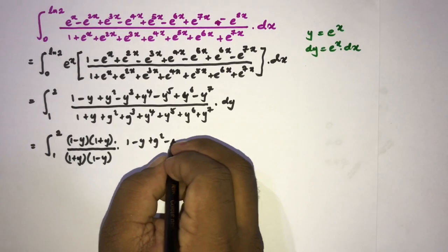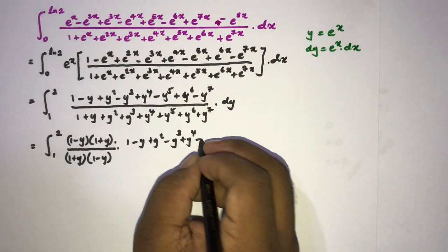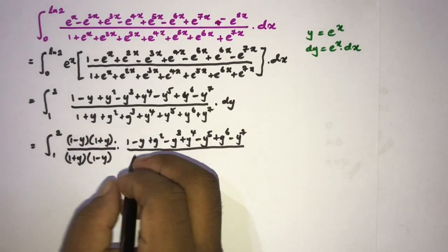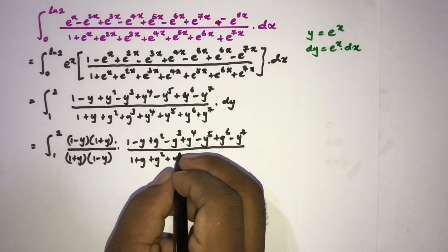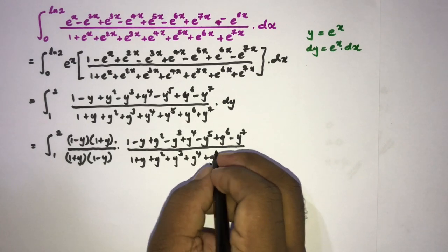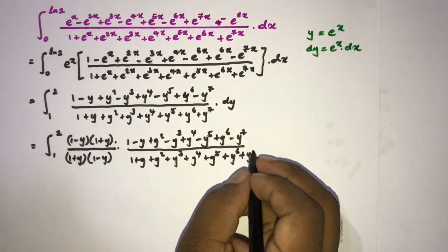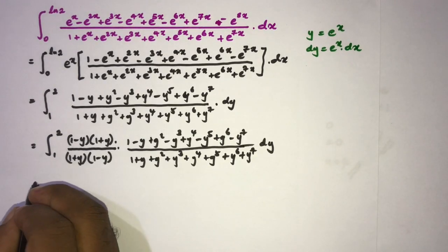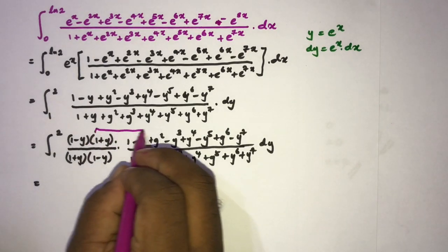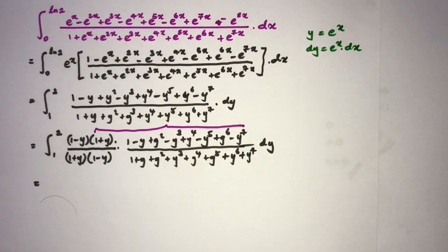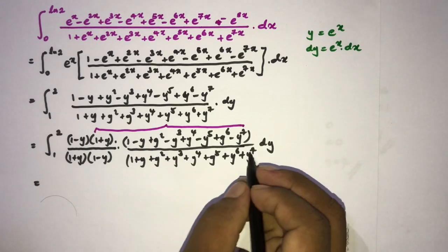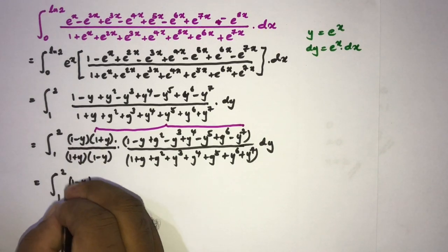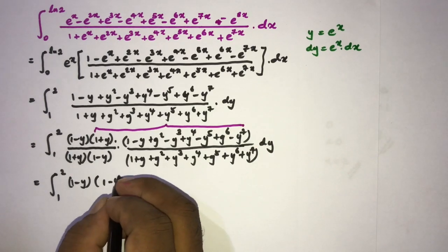So we have (1 plus y) times (1 minus y) times the numerator (1 minus y plus y squared minus y cubed plus y to the 4th minus y to the 5th plus y to the 6th minus y to the 7th), over the denominator (1 plus y plus y squared plus y cubed plus y to the 4th plus y to the 5th plus y to the 6th plus y to the 7th), times dy. Now, (1 minus y) times that alternating series equals 1 minus y to the 8th power.